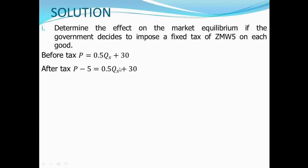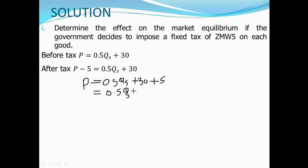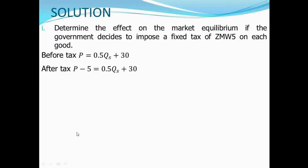From here, we can simplify this supply function by taking negative 5 to the other side of the equation so that we remain with P equal to 0.5QS. Since this negative 5 has gone to the other side, it will become positive 5. When we add this, what we'll have is 0.5QS plus 35. So our new supply function is P equal to 0.5QS plus 35.